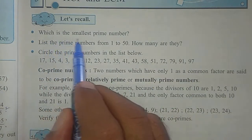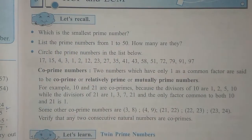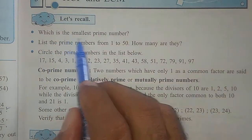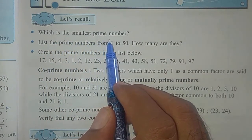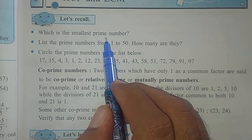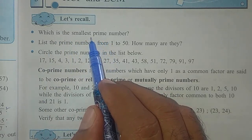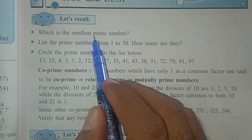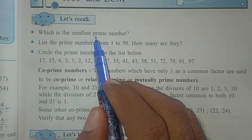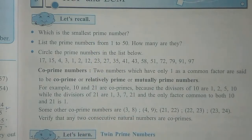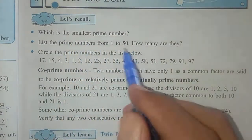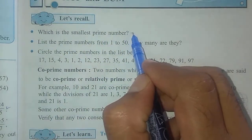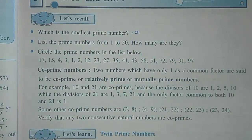The first question is: which is the smallest prime number? The smallest prime number — is it 1? No, because in fifth standard we learned that 1 is neither prime nor composite. So the smallest prime number is 2. This is explained in fifth standard.